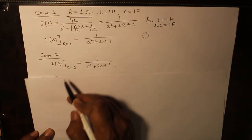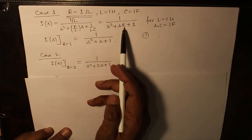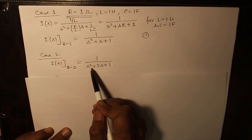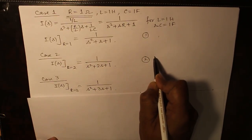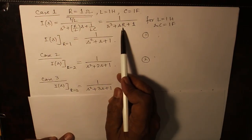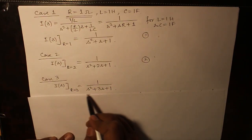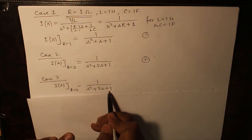Move on to the next case, where R equals 2, just substitute R equals 2 here, you get the second case. And third one, when we substitute R equals 3, it gives you 1 over s² plus 3s plus 1.